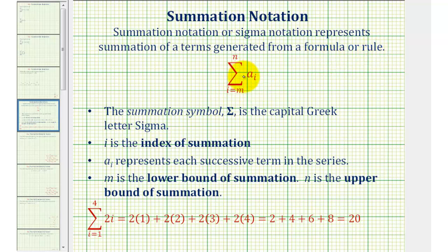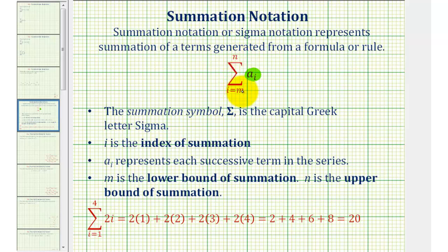Informally, we can think of summation notation as an adding machine, where the terms that we'll add are generated using the formula a sub i. This formula is in terms of i, and i starts at the value of m, increases by one until it reaches the value of n. Once we find the terms, we then sum them.